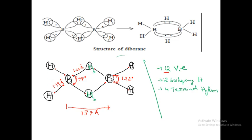All the terminal hydrogens — four terminal ones, one, two, three, four — are bonded with boron. A normal bonding is formed between each terminal hydrogen and boron. You have four normal bonds in the terminal positions.